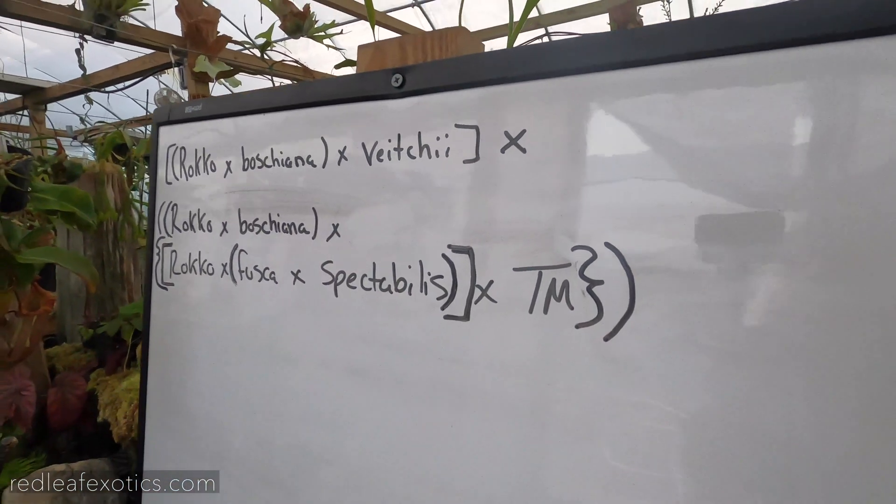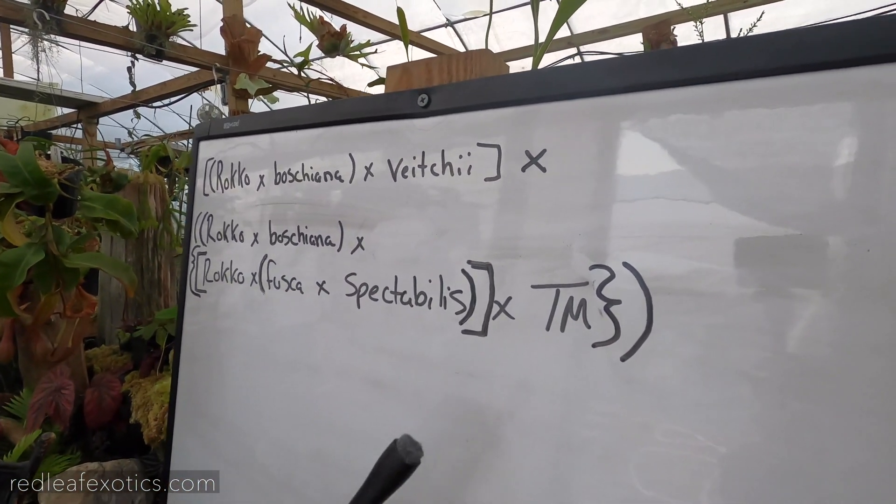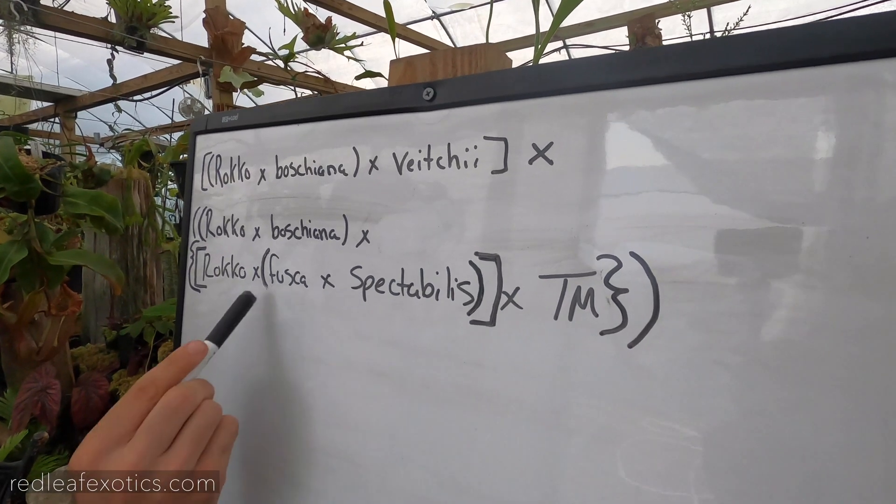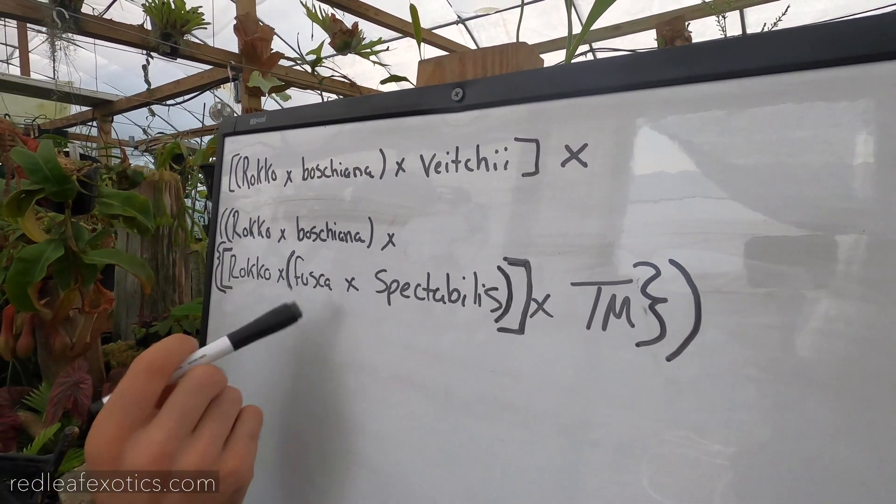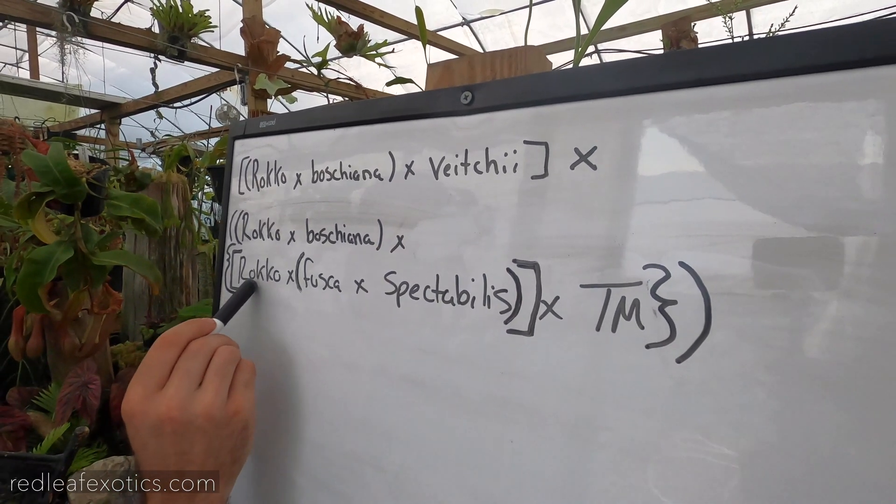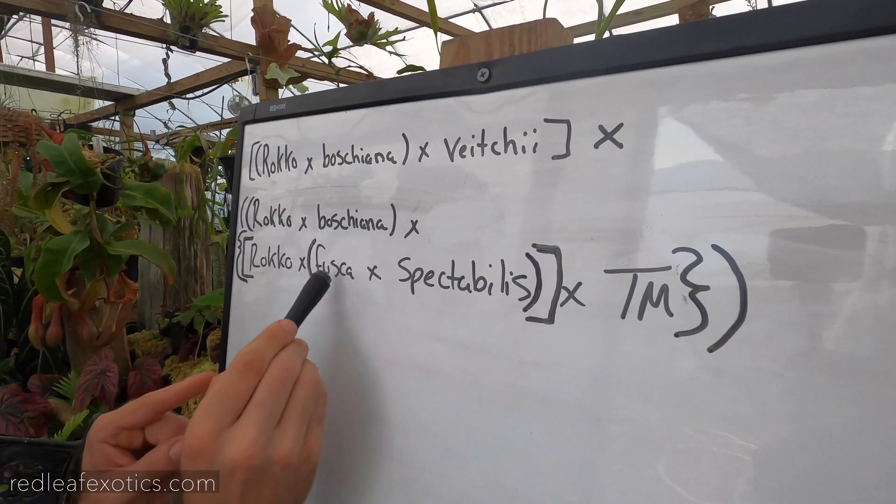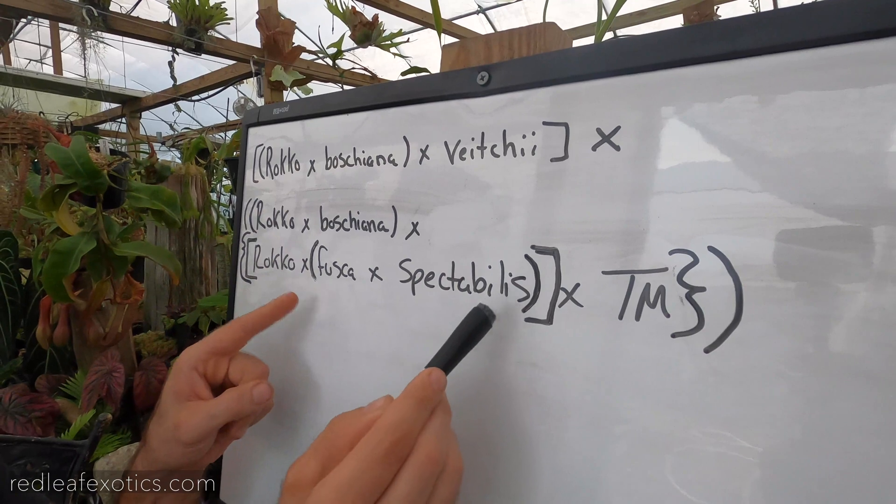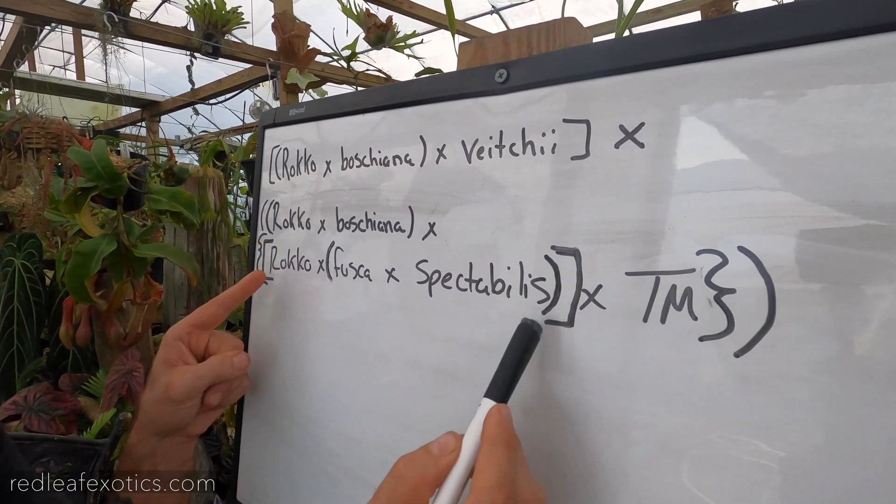And how this would begin was with the Fusca-Spectabilis. With the order of operations and the Nepenthes naming system, you always start with your parentheses first. And so they had Fusca-Spectabilis and then they crossed Roco with the Fusca-Spectabilis and then with Trasmadiensis. So Fusca-Spectabilis, parentheses, Roco was crossed with Fusca-Spectabilis. So you have the square bracket.